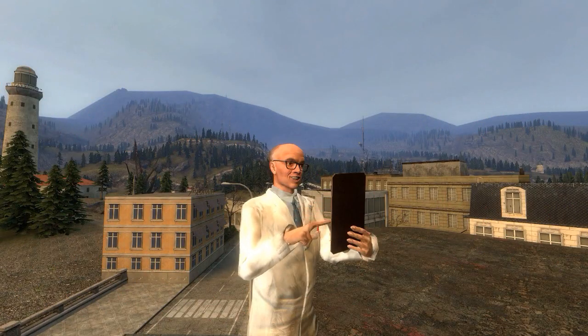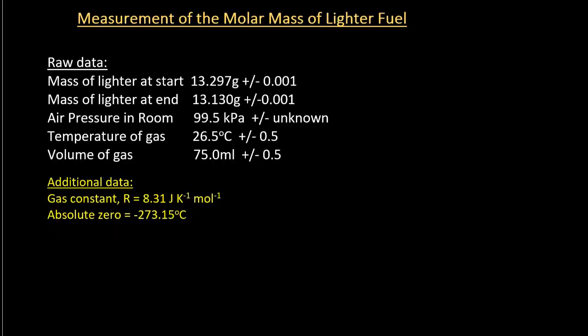So let's look at these calculations. There's the raw data and some additional data. We're going to be using the ideal gas law PV equals nRT. But if we're trying to find molar mass, that doesn't appear to actually be in the ideal gas law. It is hidden in n, which is the number of moles.